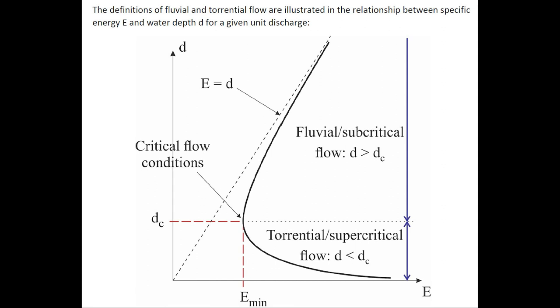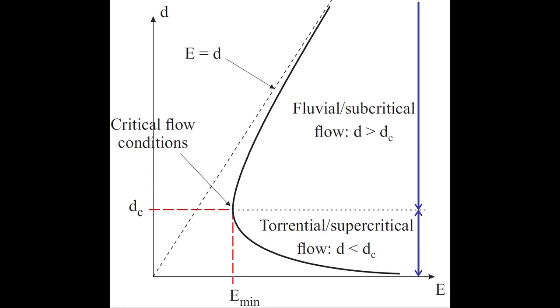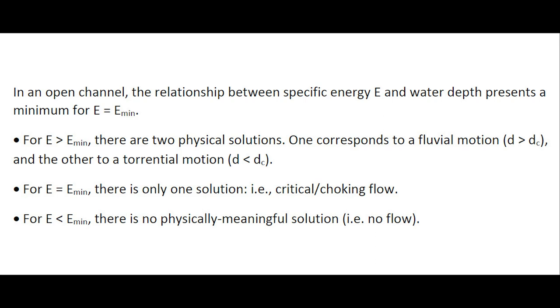The definitions of fluvial and torrential flow in an open channel are illustrated in the relationship between specific energy and water depth for a given unit discharge as shown here. In an open channel, the relationship between specific energy and water depth presents a minimum in specific energy. For a specific energy greater than the minimum specific energy, there are two physical solutions, two possible water depths. One corresponds to a fluvial motion and the other to a torrential motion.